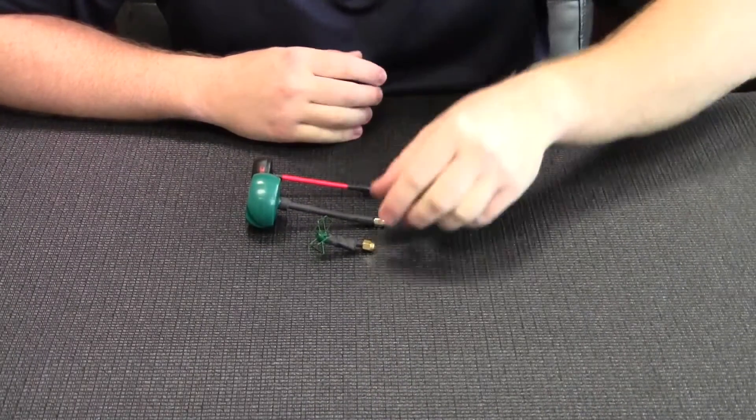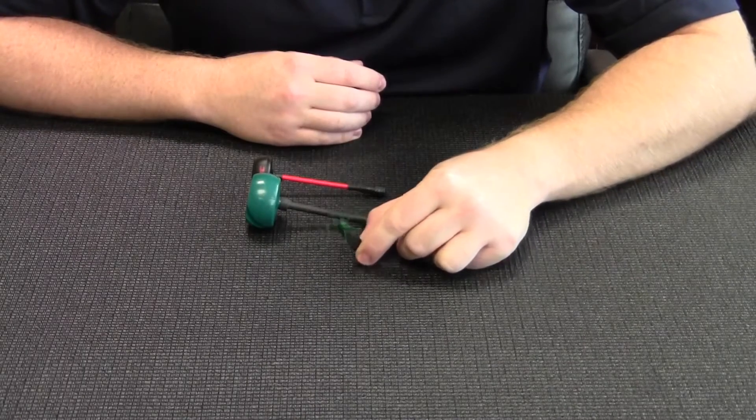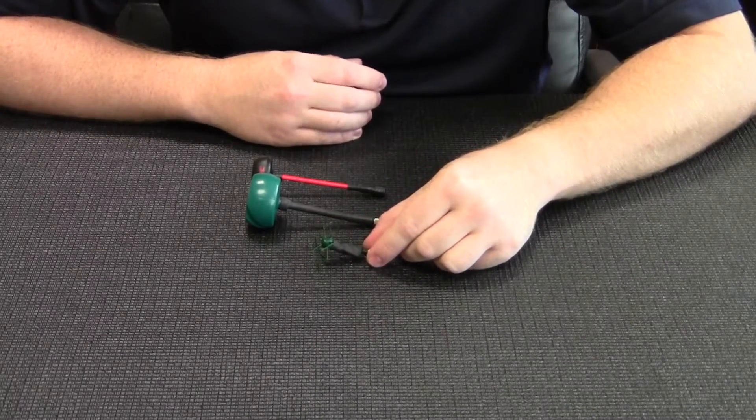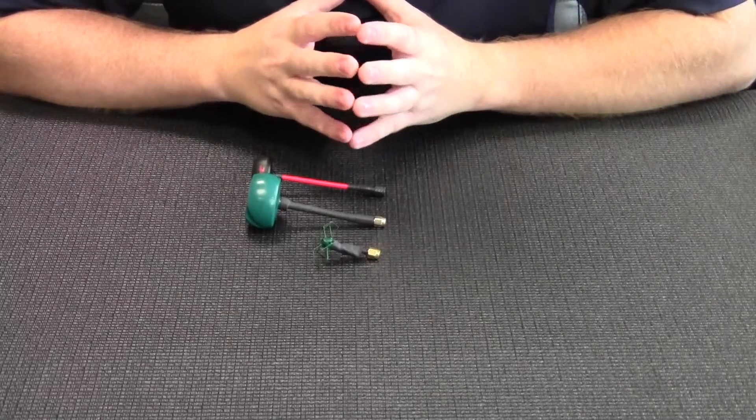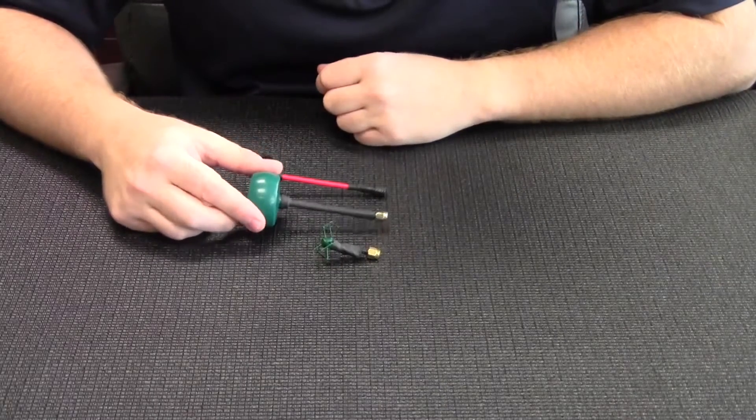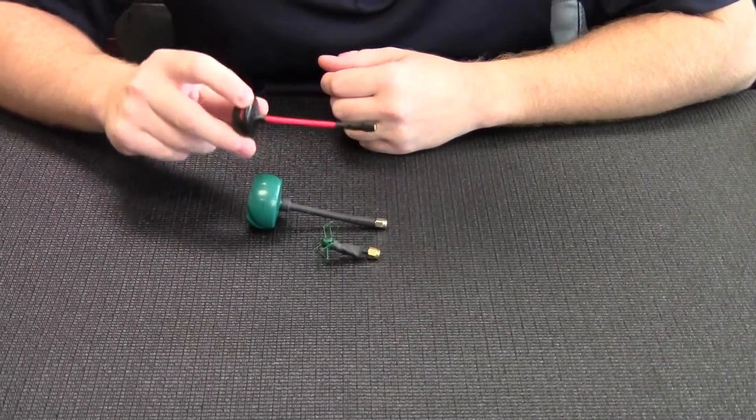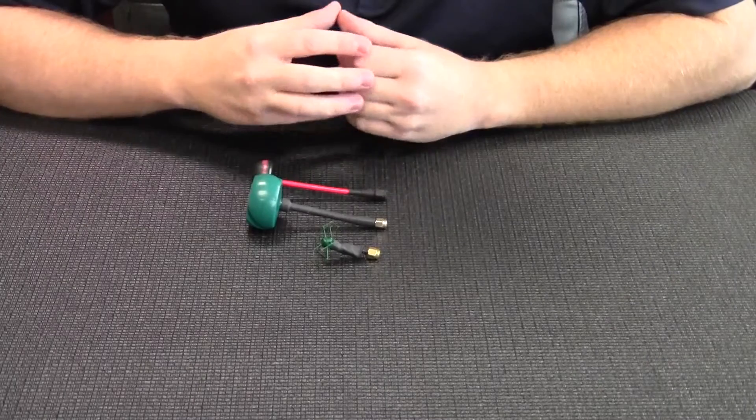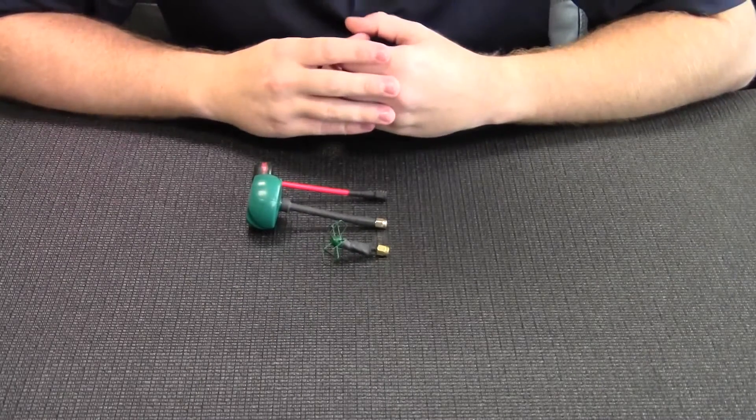So the first one I want to talk about today is the Video Aerial Systems RaySpec antenna. Now as you can see, from a physical standpoint right off the bat you're going to notice that it is much shorter and smaller than what you're going to find in a typical circular polarized antenna such as the DuraSpec or even an Immersion RC Spironet. It's actually about half the size of a regular antenna standing up.